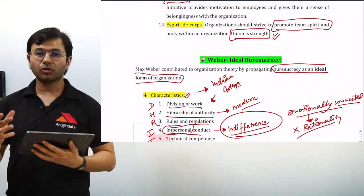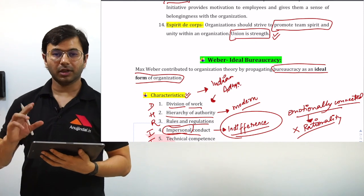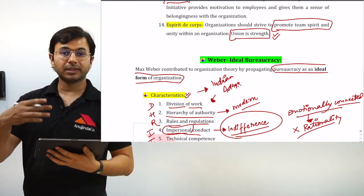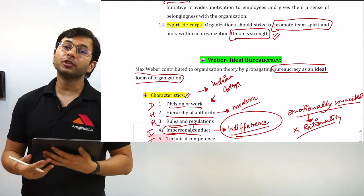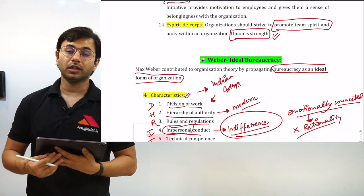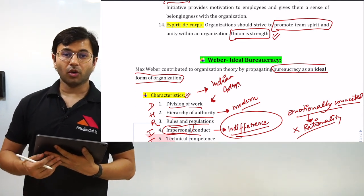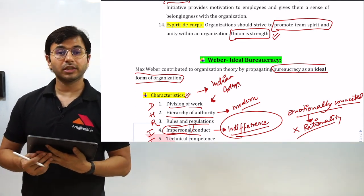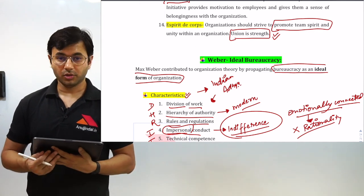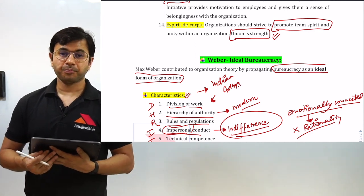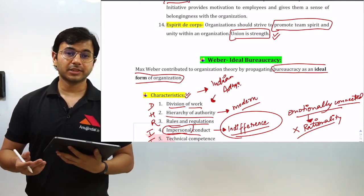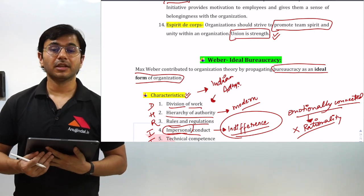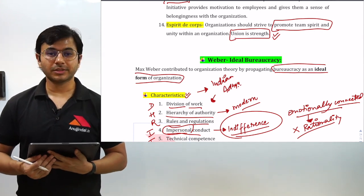That was Weber's ideal bureaucracy. In the next lesson we will take it forward, talk about human relationists or neoclassical theorists, and then discuss certain questions as well. If you like this lesson, do not forget to subscribe to the channel and press the bell icon. All the very best, take care.